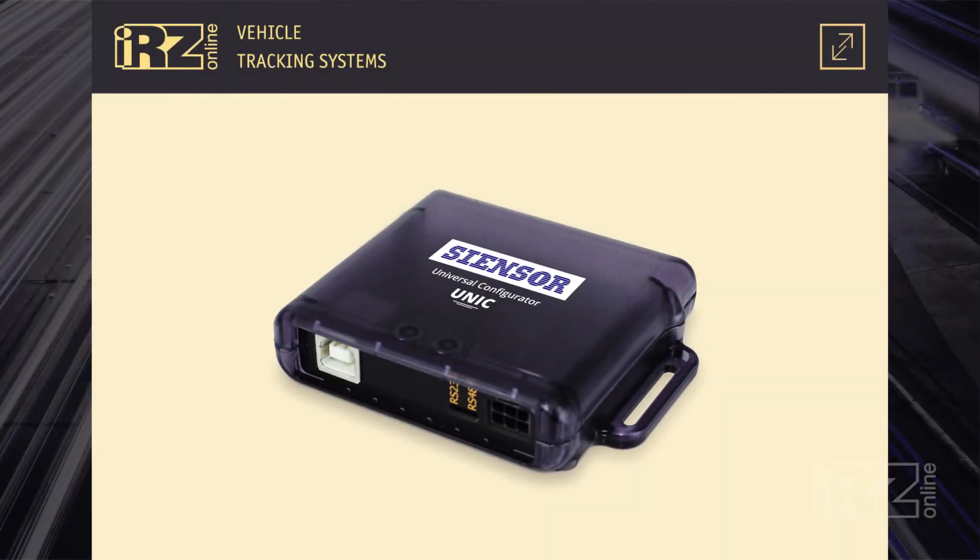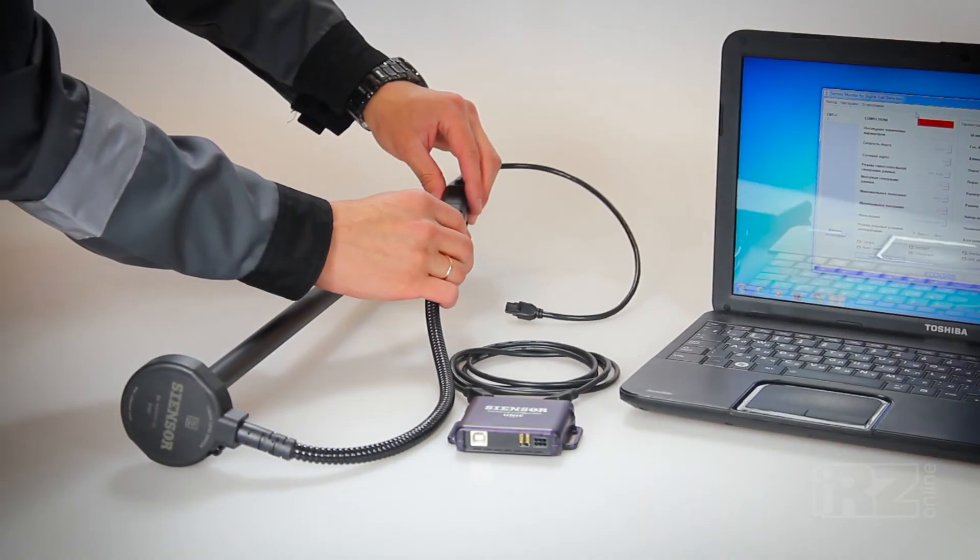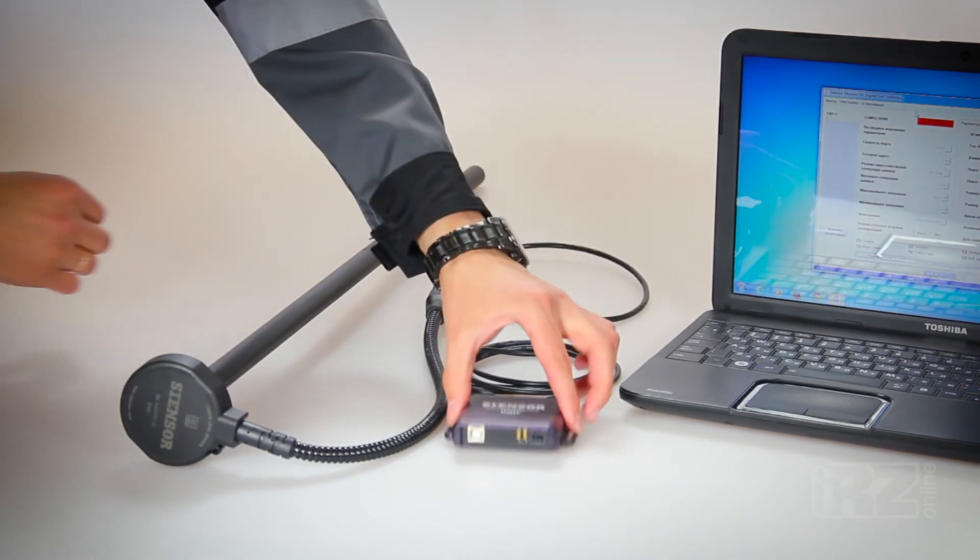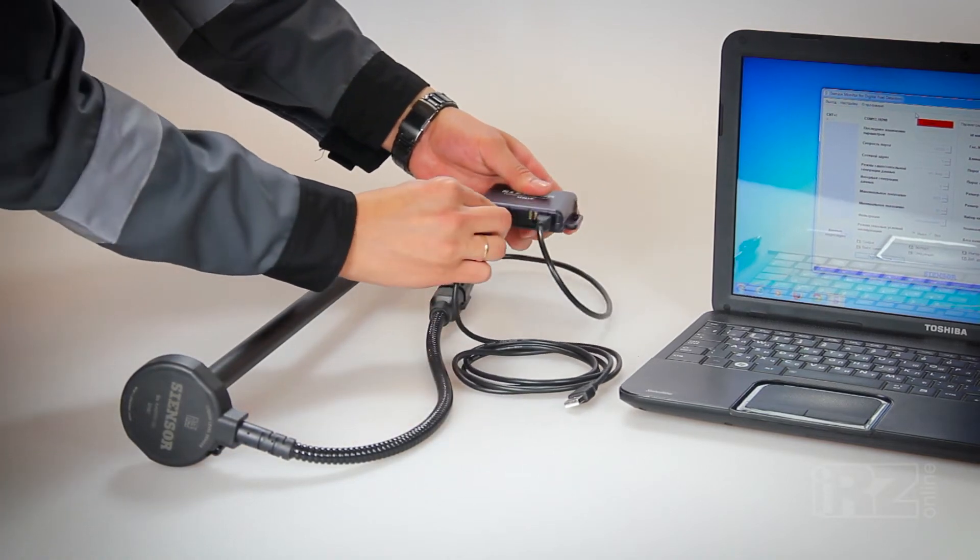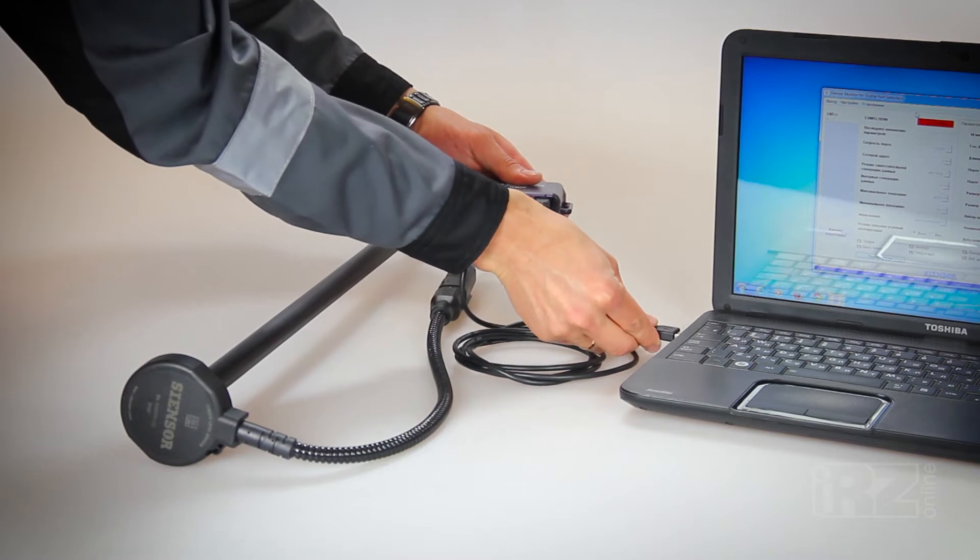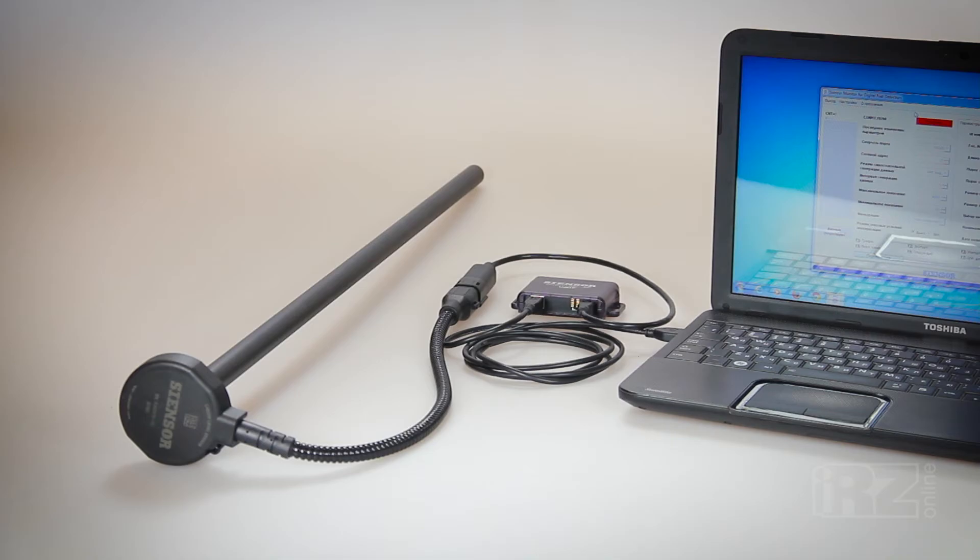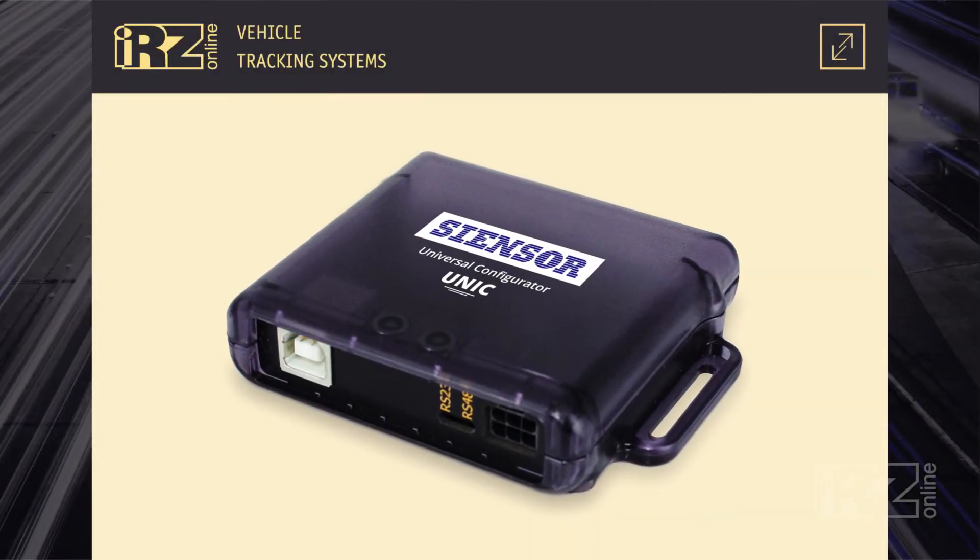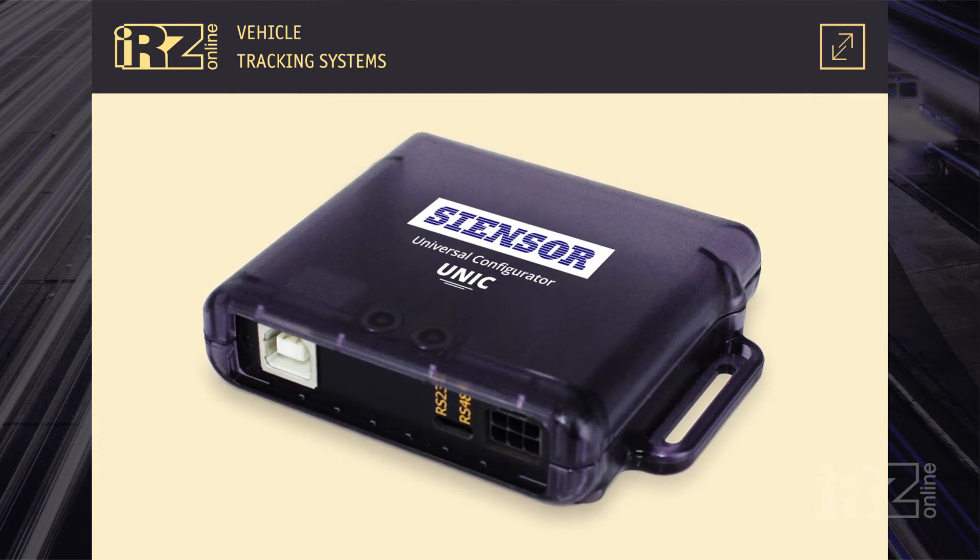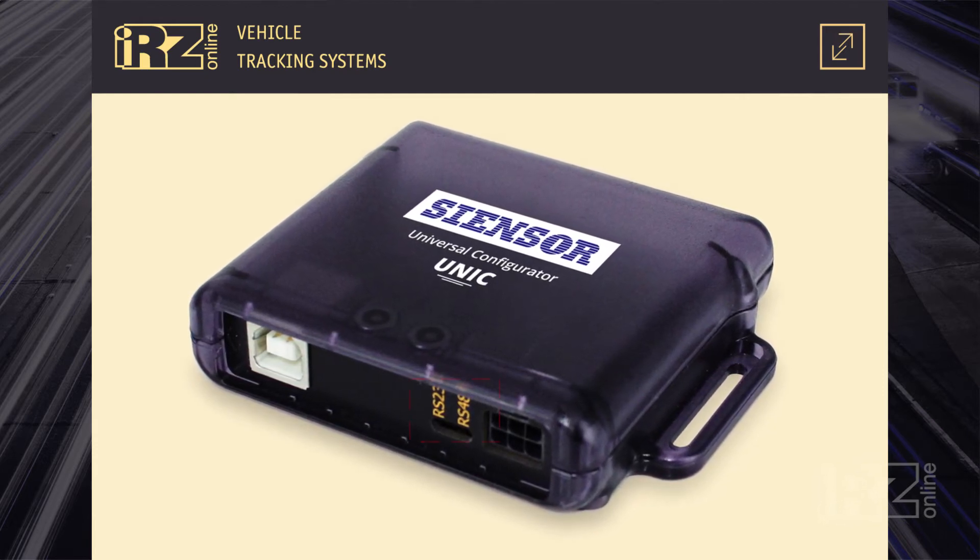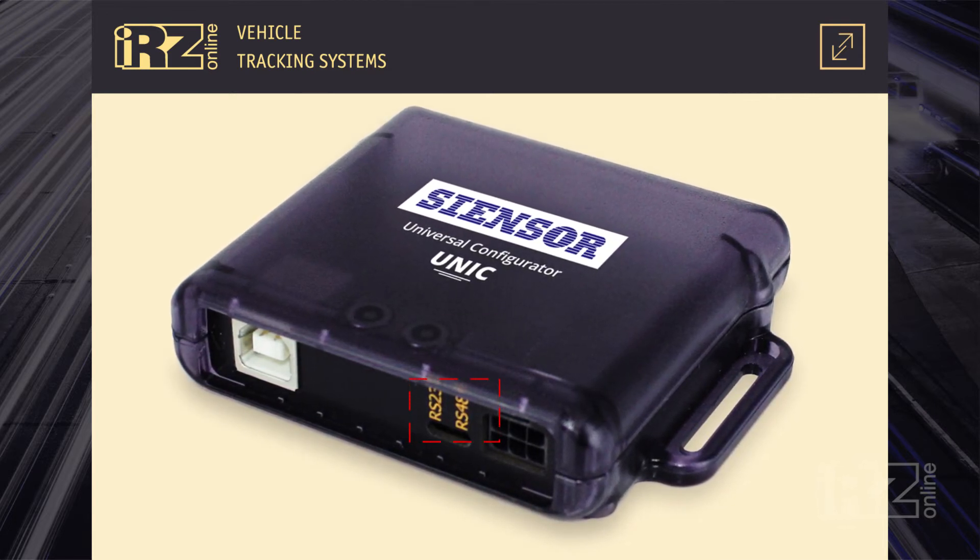You will need the equipment for the setting sensor UNIC for adjustment of the LLS. Liquid level sensor is connected to the device sensor UNIC with a special cable adapter and then to the free USB port in your computer. The connecting cable is supplied with the sensor UNIC. The sensor UNIC can work both with the interface RS-485 and RS-232. Therefore, it doesn't matter the breaker status RS-232 or RS-485 on the front panel sensor UNIC.